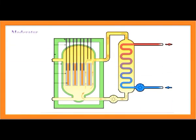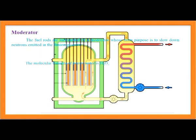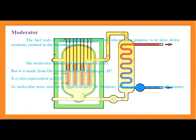Moderator: The fuel rods are surrounded by a moderator whose main purpose is to slow down neutrons emitted in the fission process. Slow-moving neutrons are more efficient in inducing fission. Heavy water and graphite are commonly used as moderators. Heavy water has the molecular formula H2O but is made from deuterium (1H2), also represented as D2O, with a molecular mass of approximately 20. Ordinary water contains heavy water in a ratio of approximately 1 to 6000.